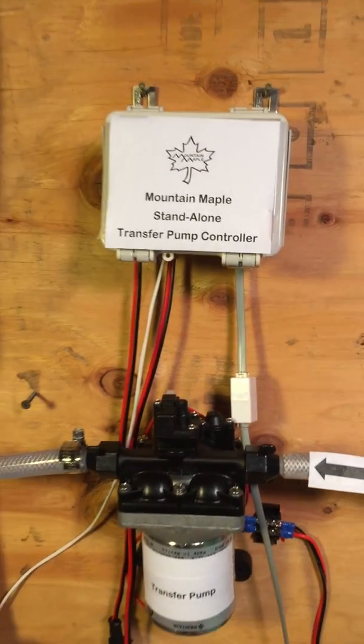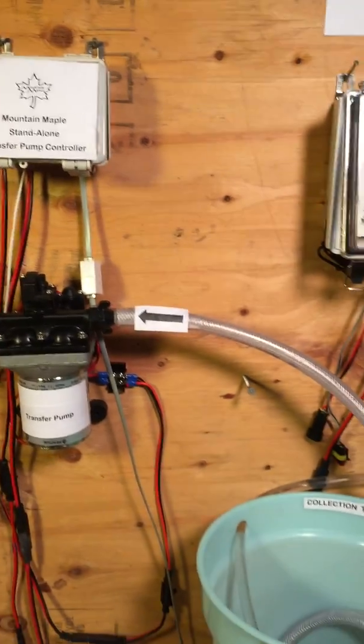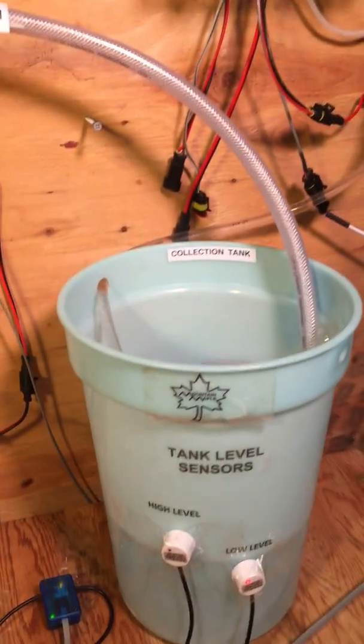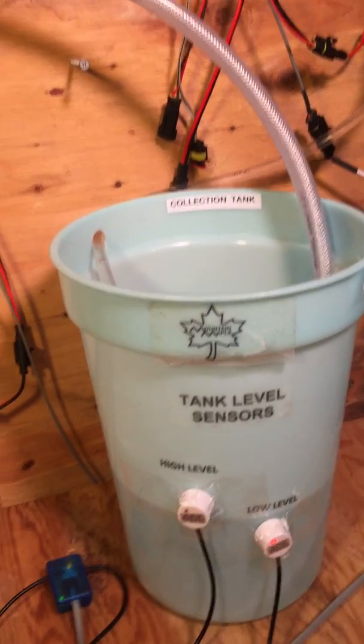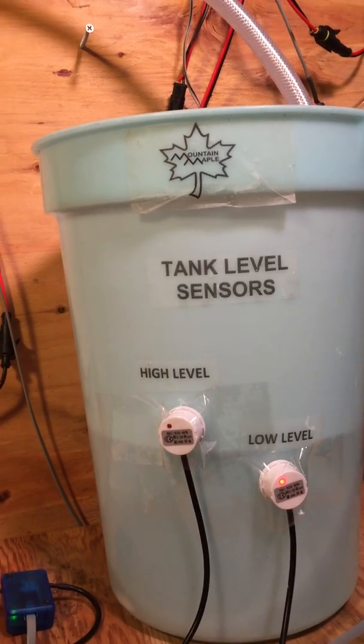So here's the setup right here. We have the controller. Right here we have a plastic sap bucket that serves as our collection tank. It has tank sensors on it.